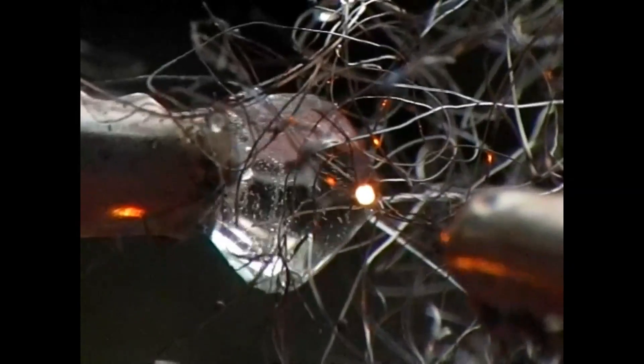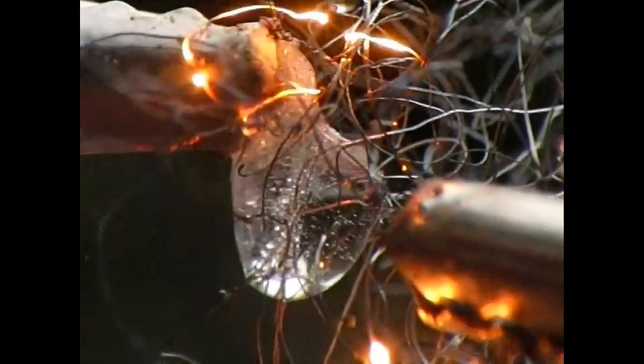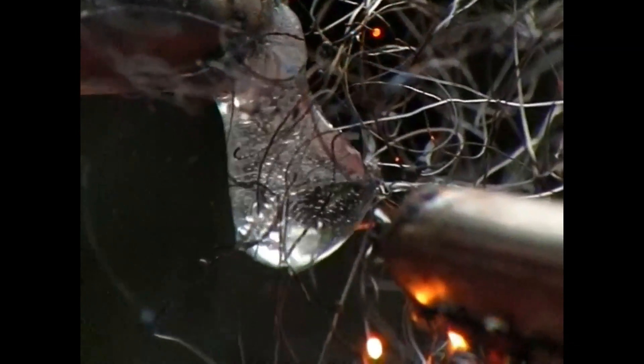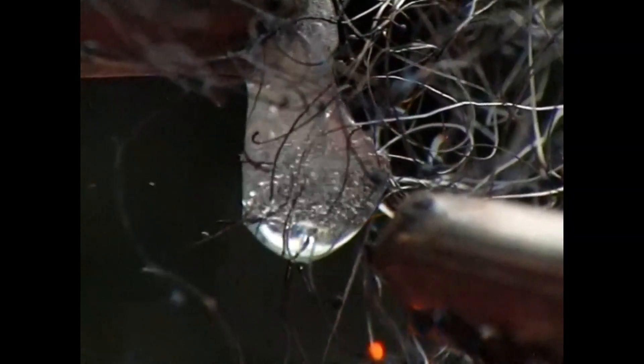Once a good connection is established allowing current to flow within the water droplet, tiny bubbles begin to form consisting of hydrogen gas on the cathode or negative terminal and oxygen on the anode or positive terminal.